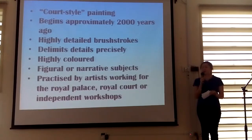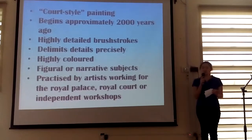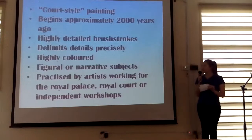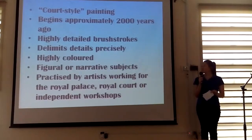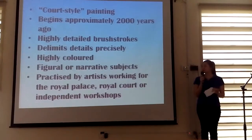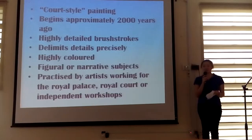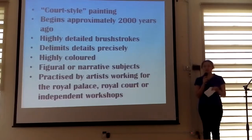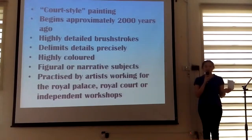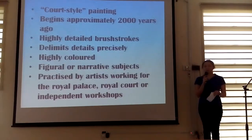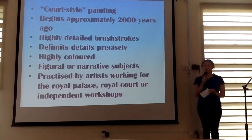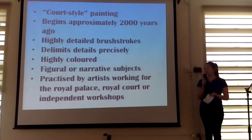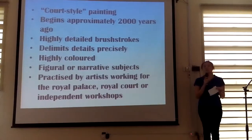It is also known as court style painting, and it began approximately 2000 years ago, giving it a very long history. The drawing is done using highly detailed brush strokes, which delimit the details very precisely. It produces a clear appearance of the subject and enhances the figure. As you can see in the examples, the paintings are all highly coloured and the colours are very vibrant. It is mostly used to paint figures on narrative subjects such as humans, plants, and animals.